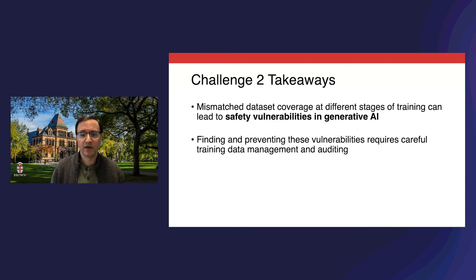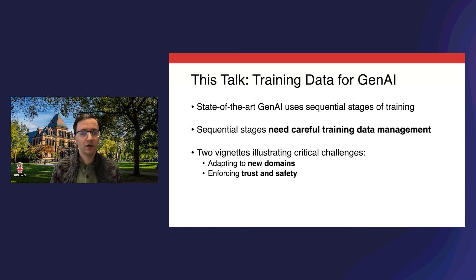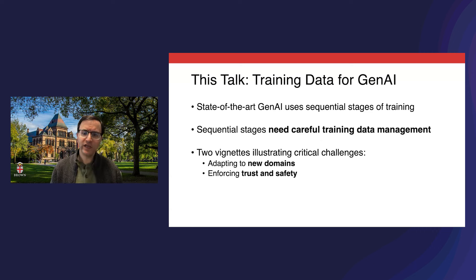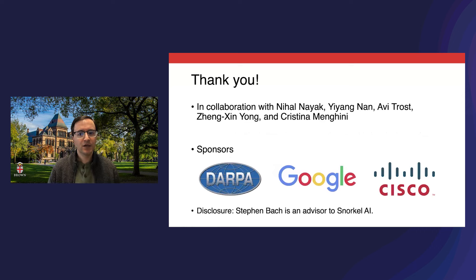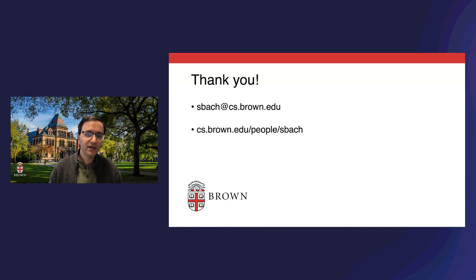This is just one high-profile instance of a safety vulnerability in LLMs. Finding and preventing them requires careful data management and auditing at all levels of the training stack. To wrap up, these vignettes illustrate why the sequential stages of LLM training need careful training data management. If we're careful and thoughtful, we can improve domain adaptation and better enforce trust and safety. I'd like to thank the researchers at Brown who did this work and our sponsors. Thank you all for attending — this is an area we're really excited about, and please do reach out if you'd like to connect.